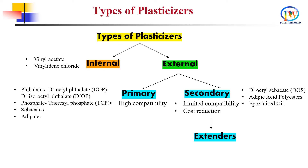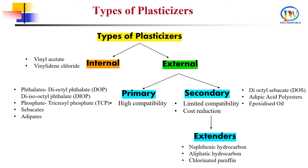Extenders are mostly low cost oils having limited compatibility in PVC. They are added to reduce cost and in some cases to improve fire resistance. Examples of extenders include naphthenic hydrocarbons, aliphatic hydrocarbons and chlorinated paraffins.